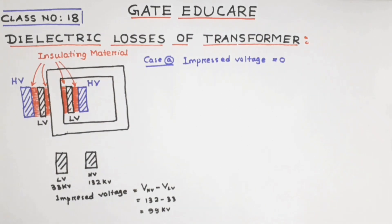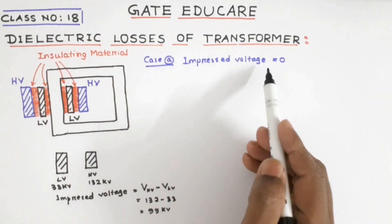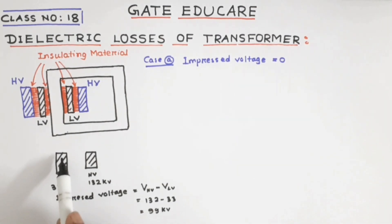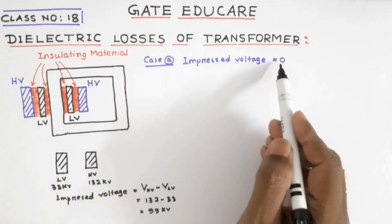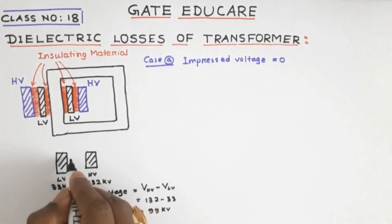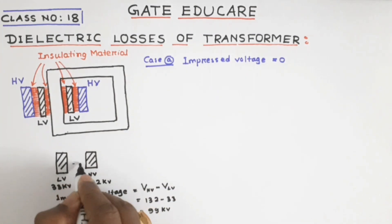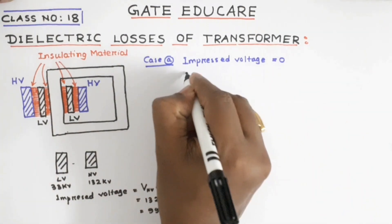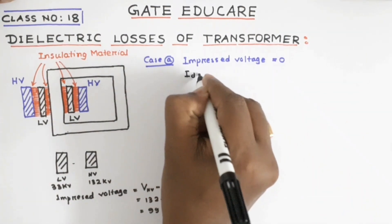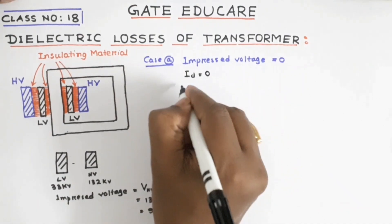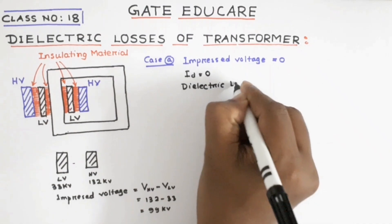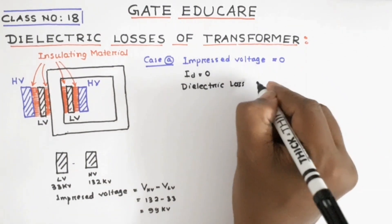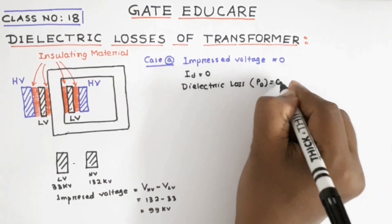Now consider Case A. Here the impressed voltage is zero, meaning the low voltage and high voltage winding have the same potential — there is no voltage difference, so the impressed voltage will be zero. In this case, there is no current between the insulating material. Therefore, the displacement current ID between the insulating material is equal to zero, and the dielectric loss PD is also equal to zero.